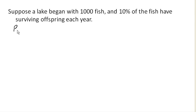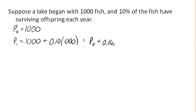We know that my initial amount of fish, my population at time 0, is 1,000. How many fish do I have after one year? I'm going to have my original 1,000 fish plus 10% of that 1,000. Because my population is going to increase by 10% of however many fish I had. I could also write this as P₀ plus 0.1 times P₀, noticing that this is 10% of the previous population.